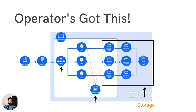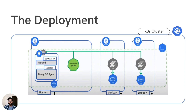The operator will take care of the storage part — it will create PVs and PVCs and create the stateful set, which will be used by the replica set. It also creates services for the network part. At the end, we have this deployment where every pod is running on the nodes. The operator manages the cluster and uses the MongoDB agent image, which will take care of the MongoDB image. And we have our cluster running.